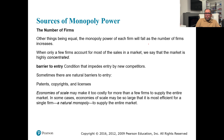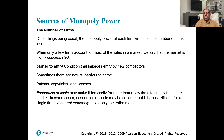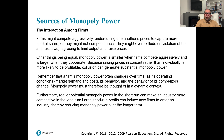Artificial barriers can also create monopoly power for a single firm through patents, copyrights, and licenses. Economies of scale may make it too costly for more than one firm to supply the entire market; in some cases economies of scale are so large that it is most efficient for a single firm — a natural monopoly — to supply the entire market.